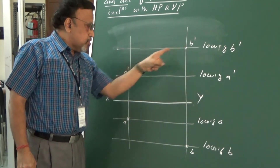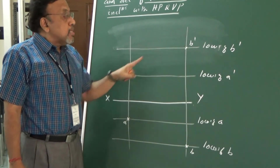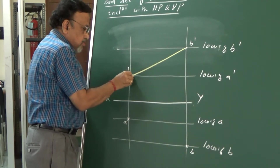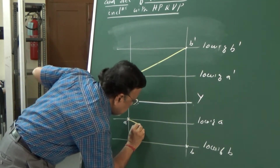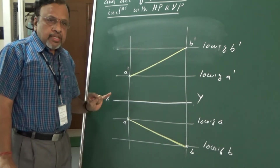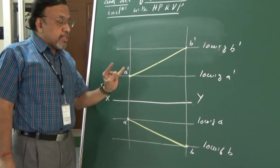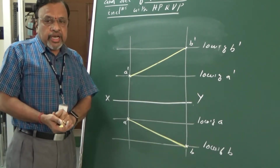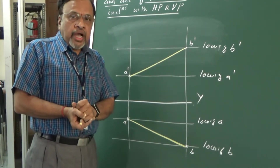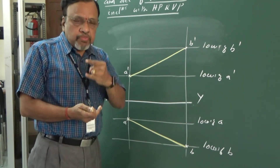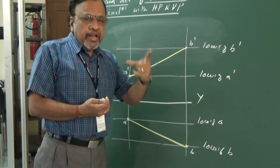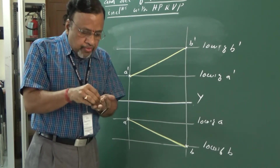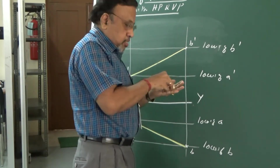Now we have a-dash and b-dash. Joining a-dash and b-dash gives the front view projection of line AB. Similarly, joining a and b gives the top view projection. So the projections a-dash–b-dash and a–b are drawn. With this given data, I now need to determine the true length and inclinations. Recalling the golden rule: whenever a line is parallel to a particular plane, on that plane we see the true length and the inclination with the other plane.